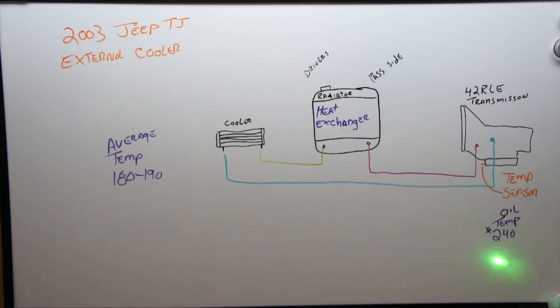So how it works is that normally your hot line from your transmission will go into the passenger side. This is from a 2003 Jeep TJ.